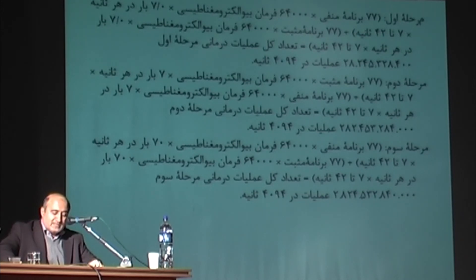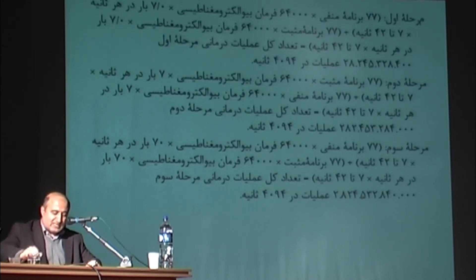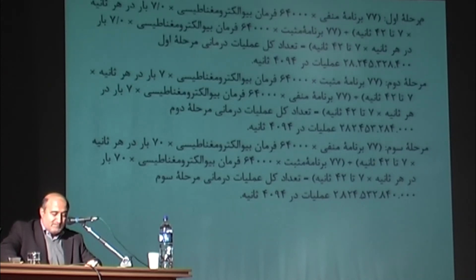Phase 3: 77 negative programs multiplied by 64,000 bioelectromagnetic commands multiplied by 70 times per second multiplied by 7 to 42 seconds, plus 77 positive programs multiplied by 64,000 bioelectromagnetic commands multiplied by 70 times per second multiplied by 7 to 42 seconds, equals a total number of third phase treatment operations of 2,824,532,840,000 in 4,094 seconds.